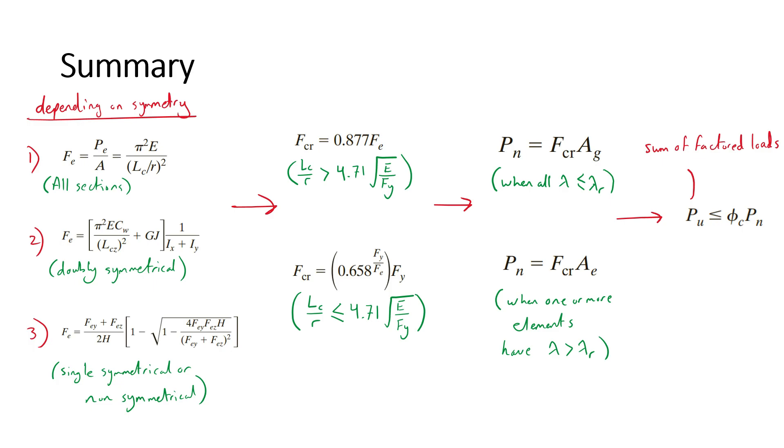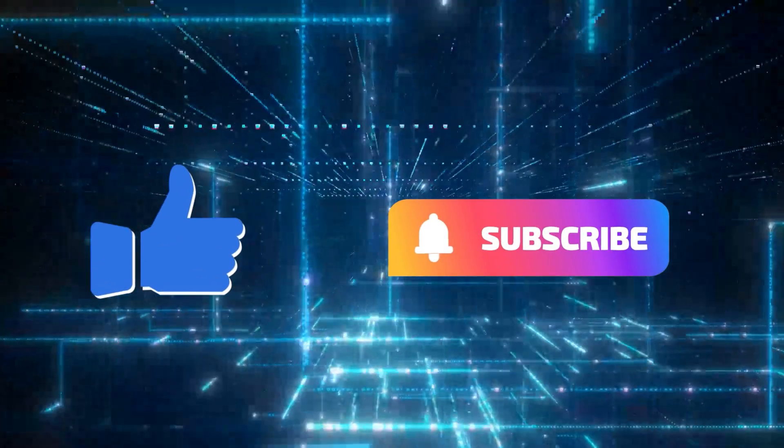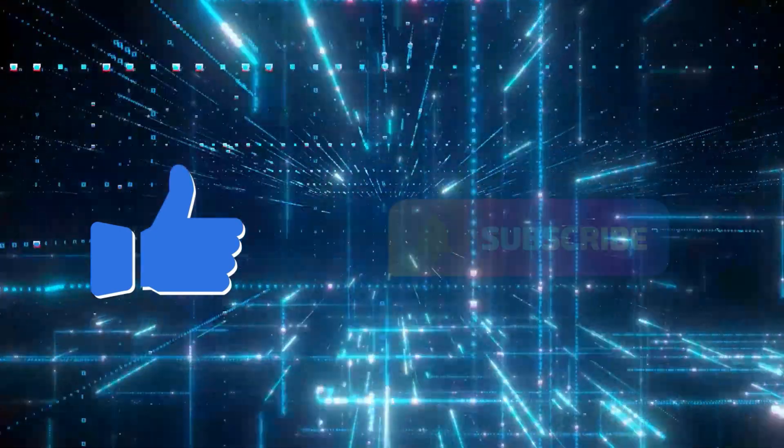Which is the resistance factor for compression with a value of 0.9 multiplied by P sub n. Don't forget to like and subscribe and turn on the notification bell. Thank you for watching.